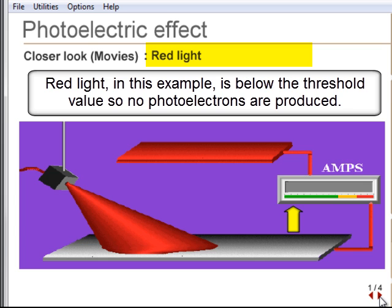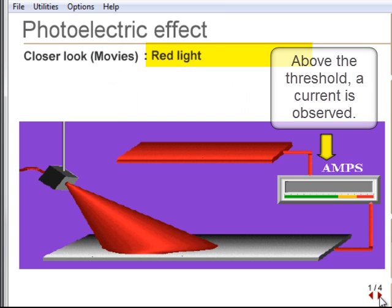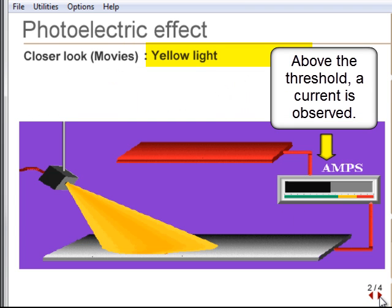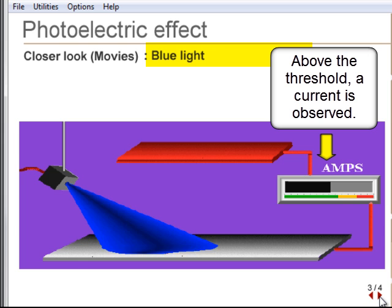Yellow, blue, and violet light are above the threshold, and if each color has the same intensity, then the same current is produced.